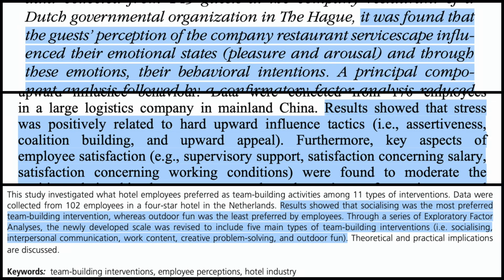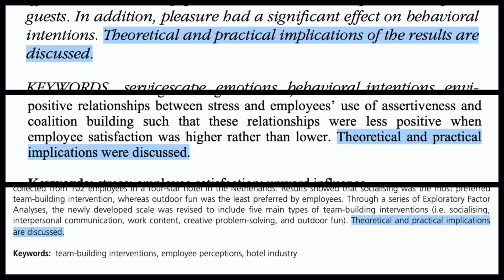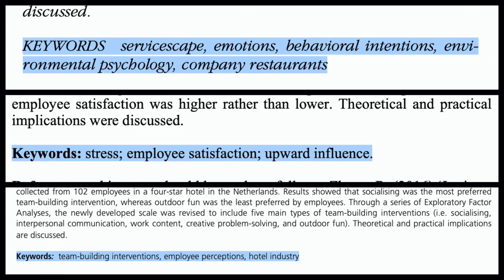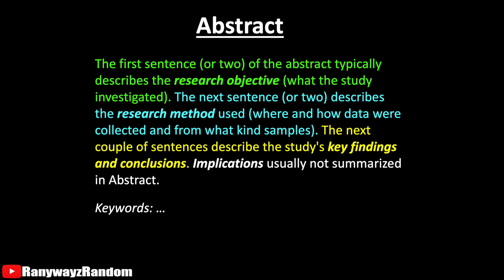One typically devotes two or three sentences to summarize key findings and conclusions in the abstract, as these are arguably the most important elements of the study. In all three examples, the abstract ended simply by stating that theoretical and practical implications were discussed, without summarizing the discussion itself. Below the abstract, the keywords are presented. That's the abstract for most research papers in its standard format.